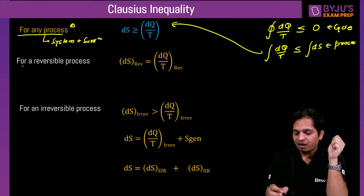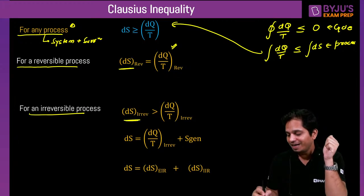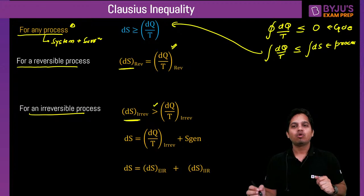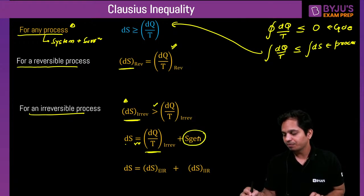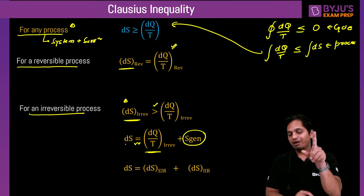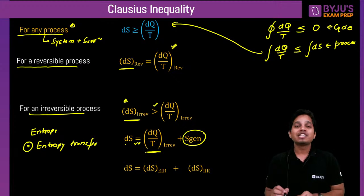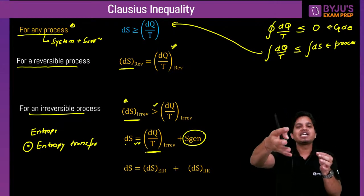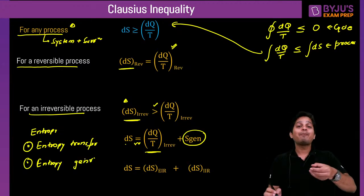Entropy change for a system undergoing a reversible process: dS equals dQ/T (entropy generation is zero for reversible process). If adding heat, dQ increases so dS increases — entropy increasing. If rejecting heat, dQ decreases so entropy decreases. If reversible adiabatic, dQ equals zero so dS equals zero — entropy remains constant. When entropy remains constant, the process is called isentropic.